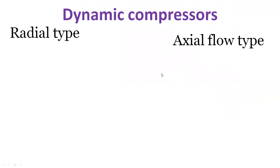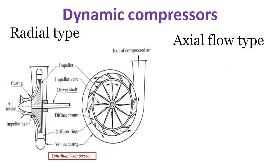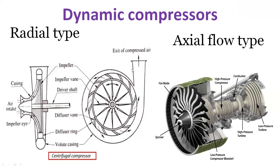Dynamic compressors increase air velocity, which is then converted to increased pressure at the outlet. They are centrifugal compressors, further divided into radial and axial flow types. Unlike pumps that deal with incompressible liquid, for air, throttling the output increases pressure because it gets compressed. Centrifugal compressors are typically suitable for outputs above 12,000 cubic feet per minute. A radial type takes air in axially and delivers compressed air radially, while the axial flow type acts like a turbine.